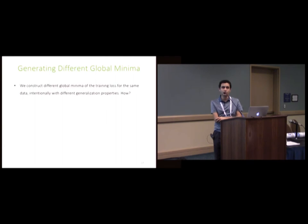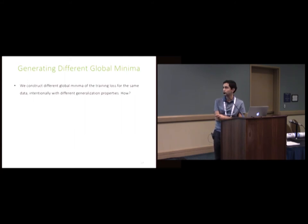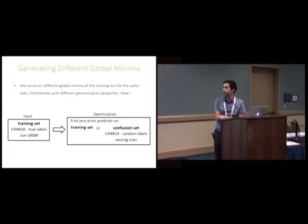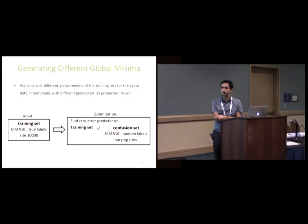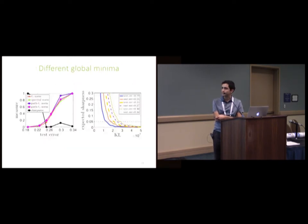The second experiment is with global optima. I want to generate several global optima and see if these measures can tell me which one is going to generalize better. We use an optimization algorithm that takes a training set and has a confusion set inside it with some data with random labels — it minimizes the loss on both the training set and the confusion set. The final solution is a global optimum for the training set. By changing the size of the confusion set, you get worse and worse global optima. We plot these measures versus the test error, and all norm-based measures can capture this. This is also true for expected sharpness and KL from the PAC-Bayes bound — if you fix sharpness, the one with higher test error has higher KL.